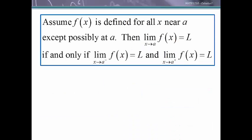We can formally state this. Assume f of x is defined for all x near a except possibly at a. Again, we don't need the value defined right at a. Might be, but doesn't need to be. Then the limit as x approaches a of f of x equals l if and only if the left-hand limit, there's our x approaching a from the left, equals l,